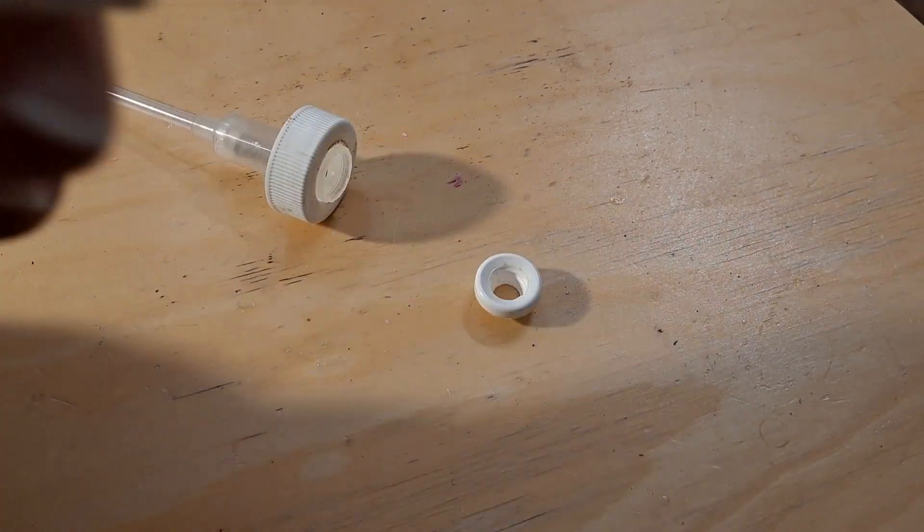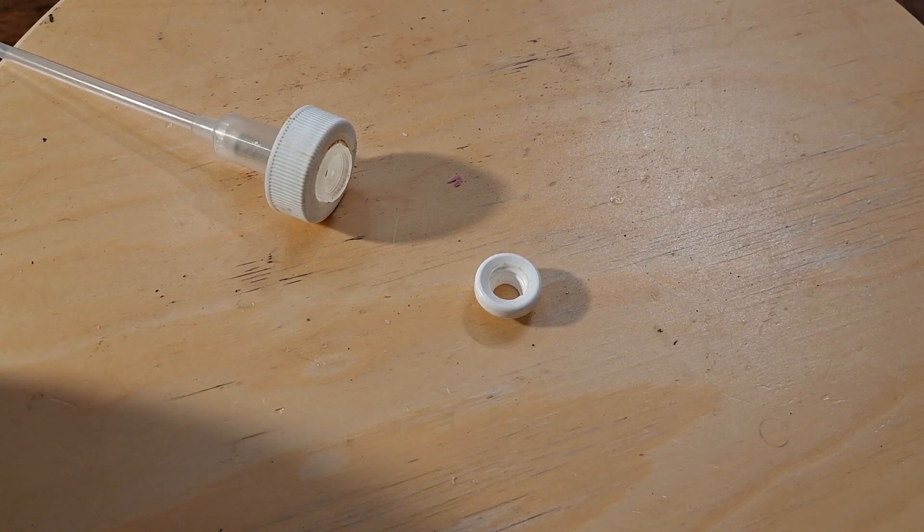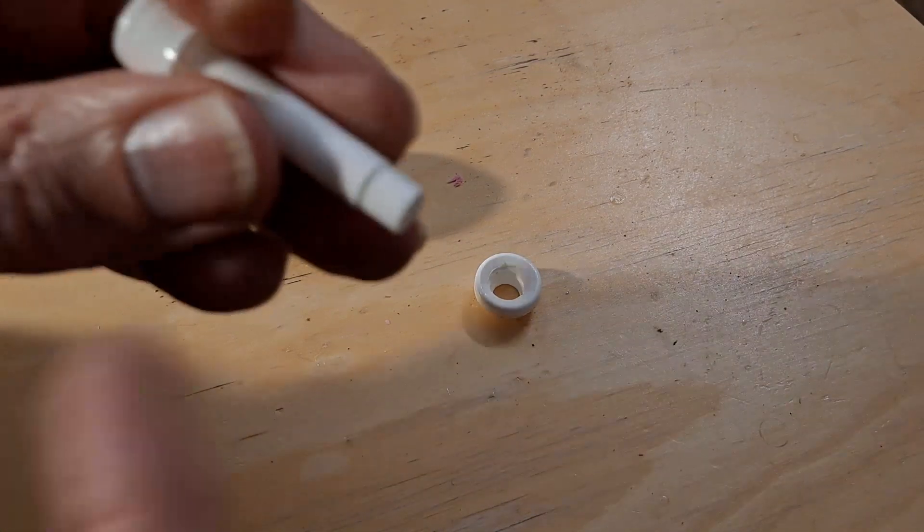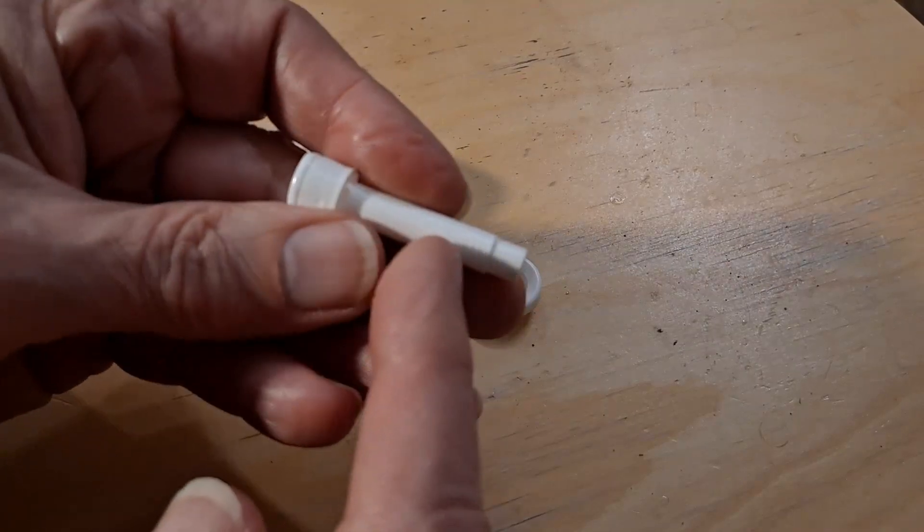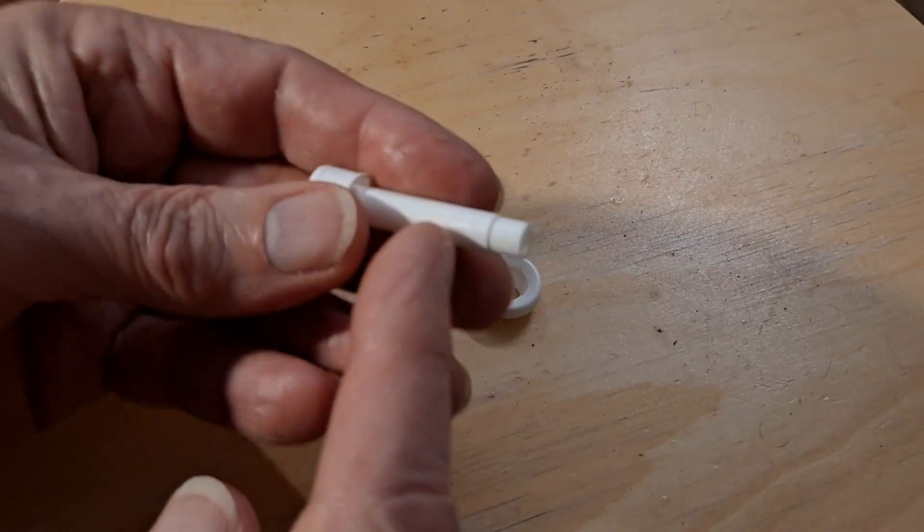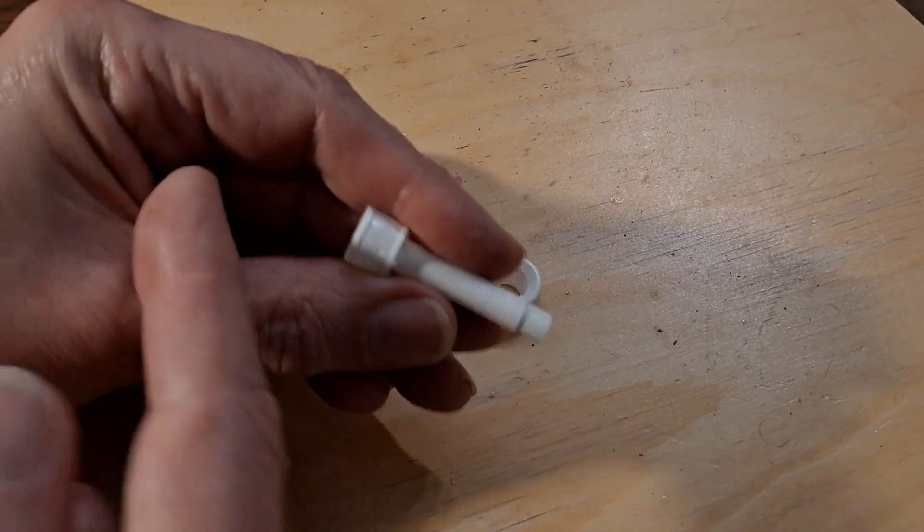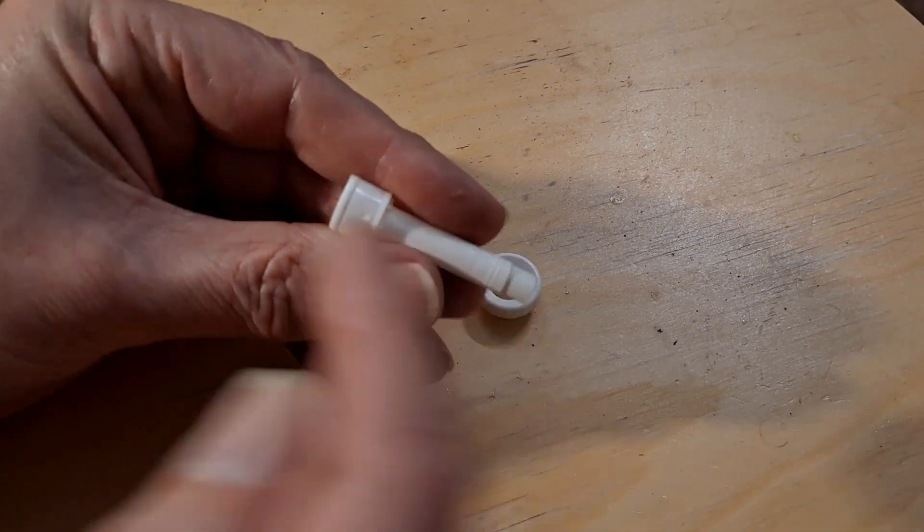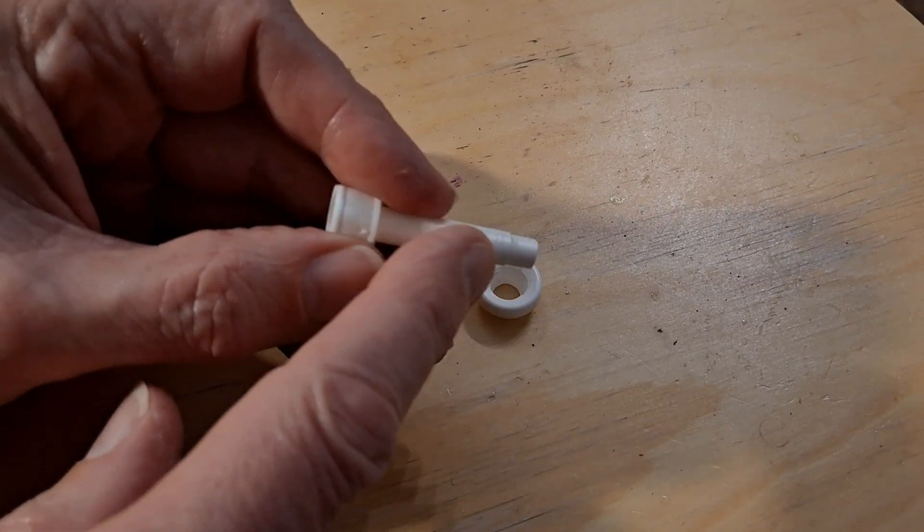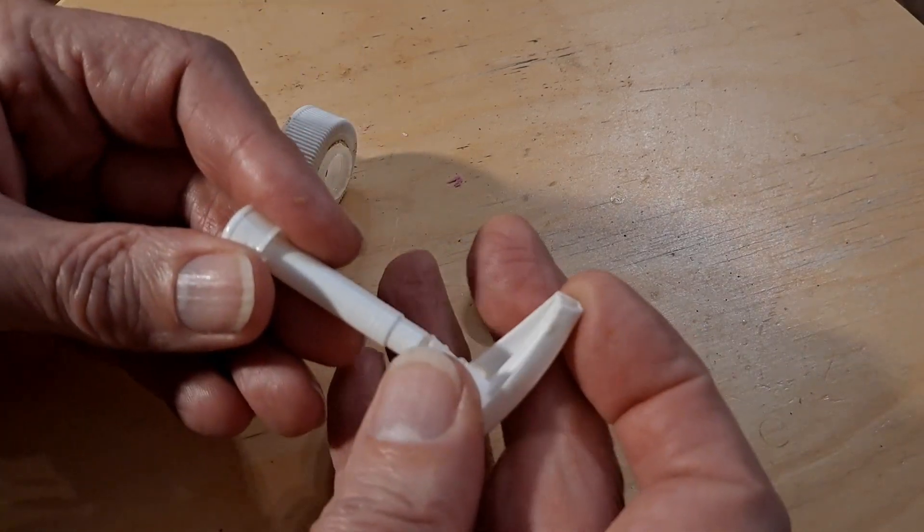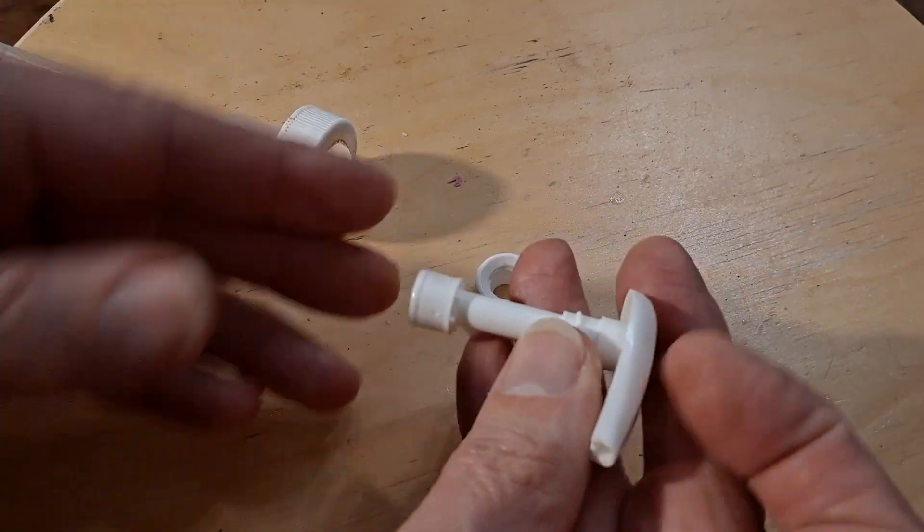If I blow through it, I can blow through it, but if I try and suck, the little ball seals down. So there's a little captive ball in there that when you try and suck out of this end, the ball goes down and seals it. When you blow, it blows it clear and the air can come out. So that's how that end works.